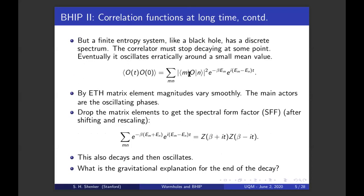But a finite entropy system, like a black hole, has a discrete spectrum. The correlator must stop decaying at some point. It's just a bunch of oscillating phases. And eventually it will oscillate erratically around a small mean value. Now by ETH, these matrix element squares vary smoothly. ETH is eigenstate thermalization hypothesis. And so the main actors in this process are these oscillating phases. So focus on them by just dropping the matrix element and getting this thing called the spectral form factor, the sum over the oscillating phases.